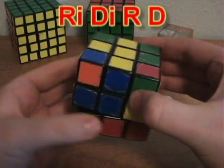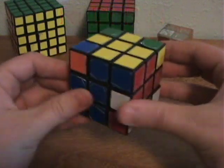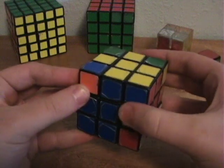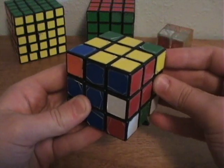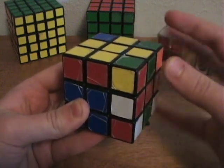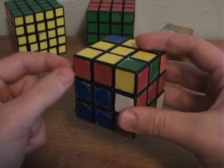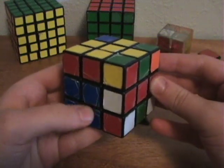R I D I R D R I D I R D. That time it took only twice. Now just rotate the top layer so that another unoriented corner is in the same place where the last one was. Then just do the algorithm two or four times again.